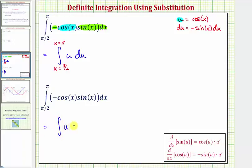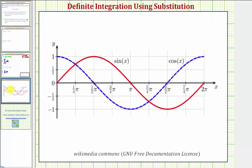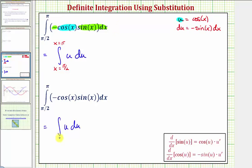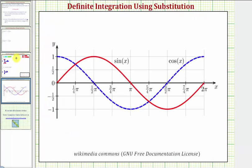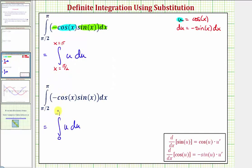To find the limits of integration for u, we would substitute the x values into our equation for u. Notice when x equals pi over two, u is equal to cosine of pi over two, and cosine pi over two is equal to zero. So the lower limit of integration for u would be zero. And when x is pi, we'd have u equals cosine pi, and cosine pi is equal to negative one. So if we use these limits, we'd use the antiderivative in terms of u; if we leave the limits in terms of x, we'd use the antiderivative in terms of x.